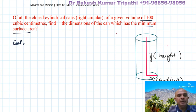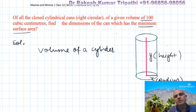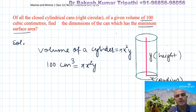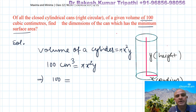We are given the volume, and we know that the volume of a cylinder is π·r²·h, which we write as π·x²·y. We are given this is equal to 100 cubic centimeters. Let this be equation number one. For the rest of the question we shall write only 100 instead of 100 centimeter cube.